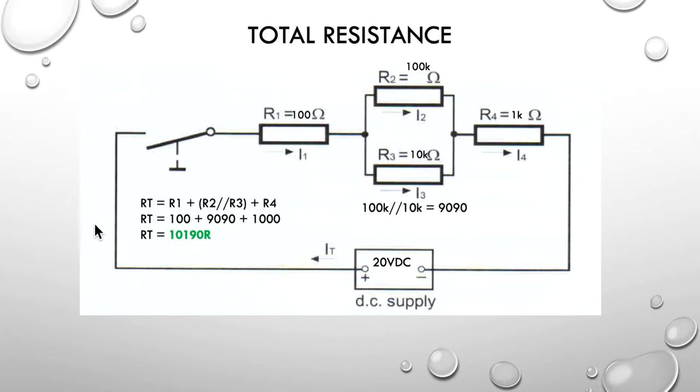I've done a couple of quick calculations around the circuit. Our parallel network of 10k and 100k is about 9.09, so 9,000 and 90 ohms. We add that to our 100k, our 990 and our 1000, and it gives us 10,190 ohms as the R total. Keep that number in your head, we'll be needing it later on.